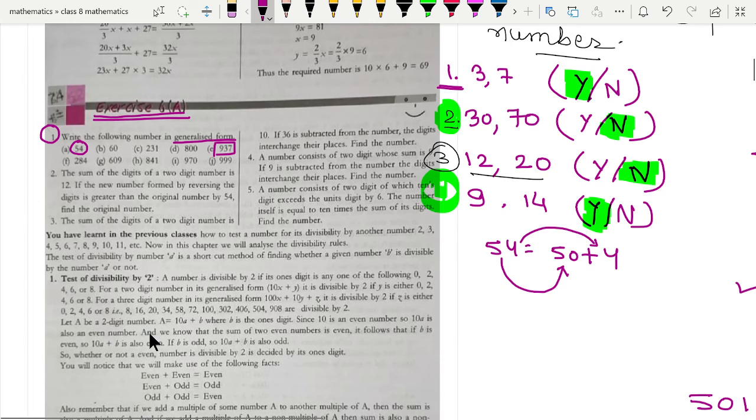Now let me show you the second part of the question, or what does this statement say: if the new number formed by reversing the digit. Let me show you how number will be reversed and how the value will be changed. See, if the number is suppose 23, so here it is 2 into 10 plus 3. This is the two-digit number value. But if the number is reversed, it will be 32, and the value will be changed like 3 into 10 plus 2 into 1 in the same way.